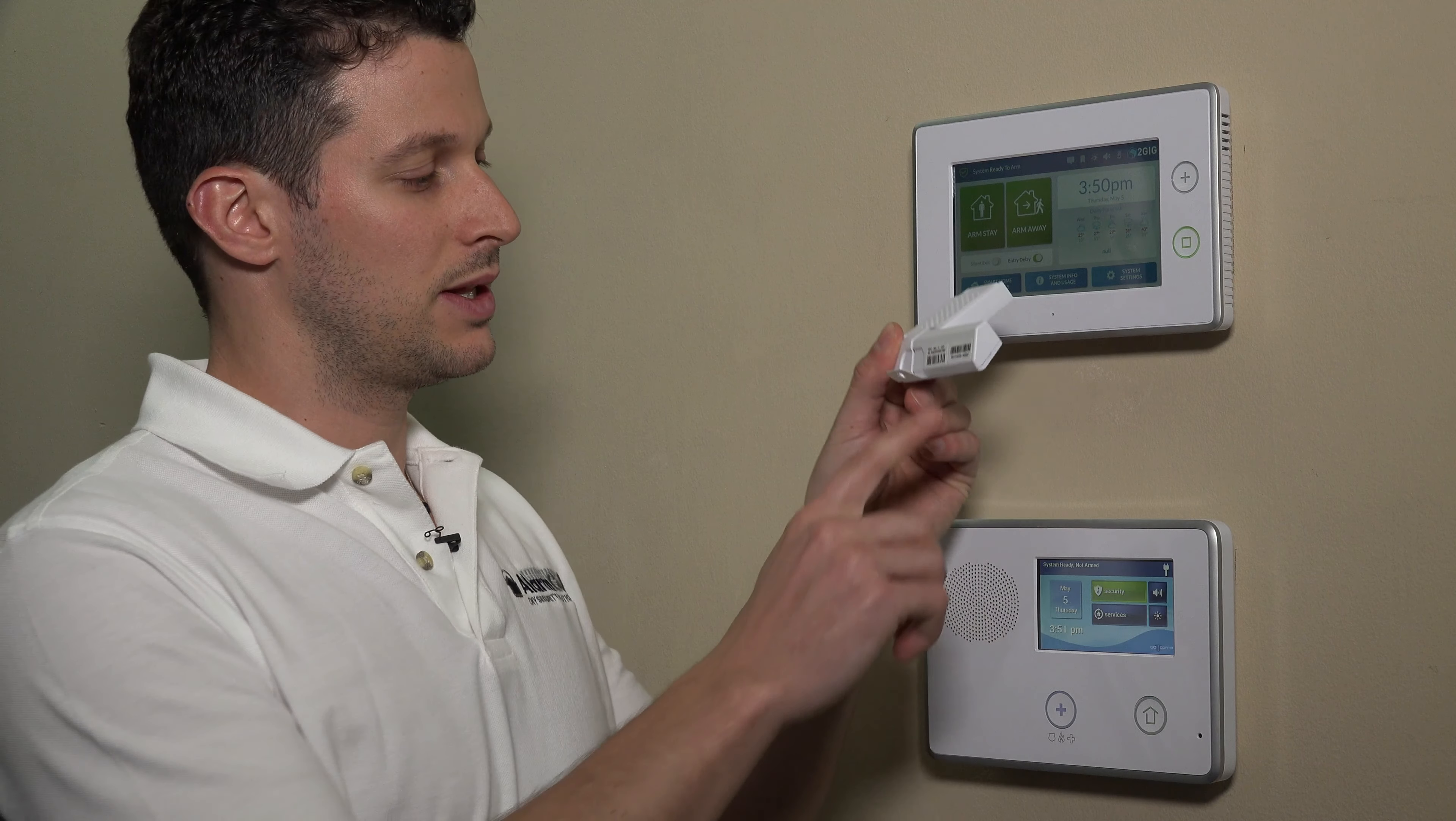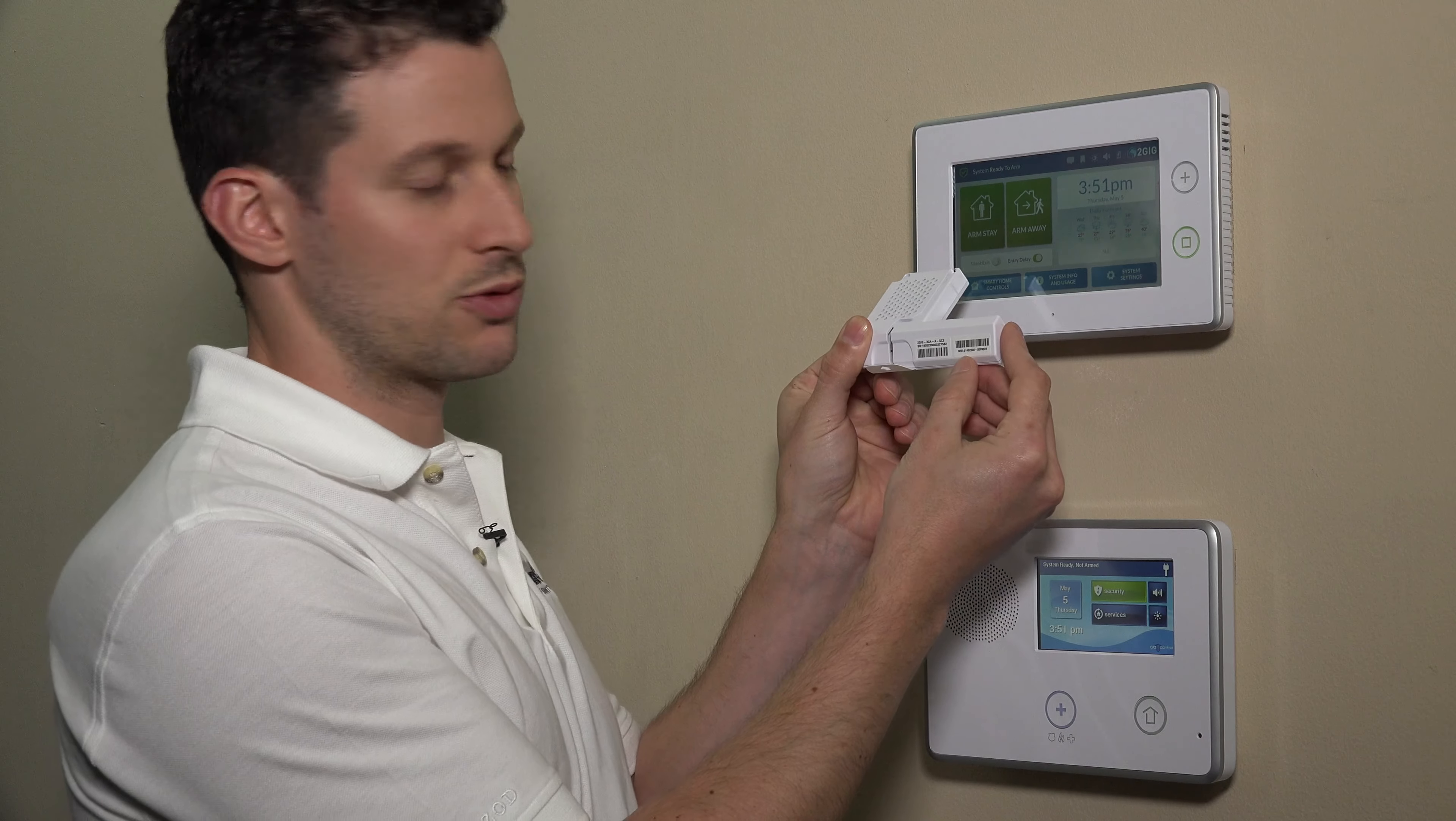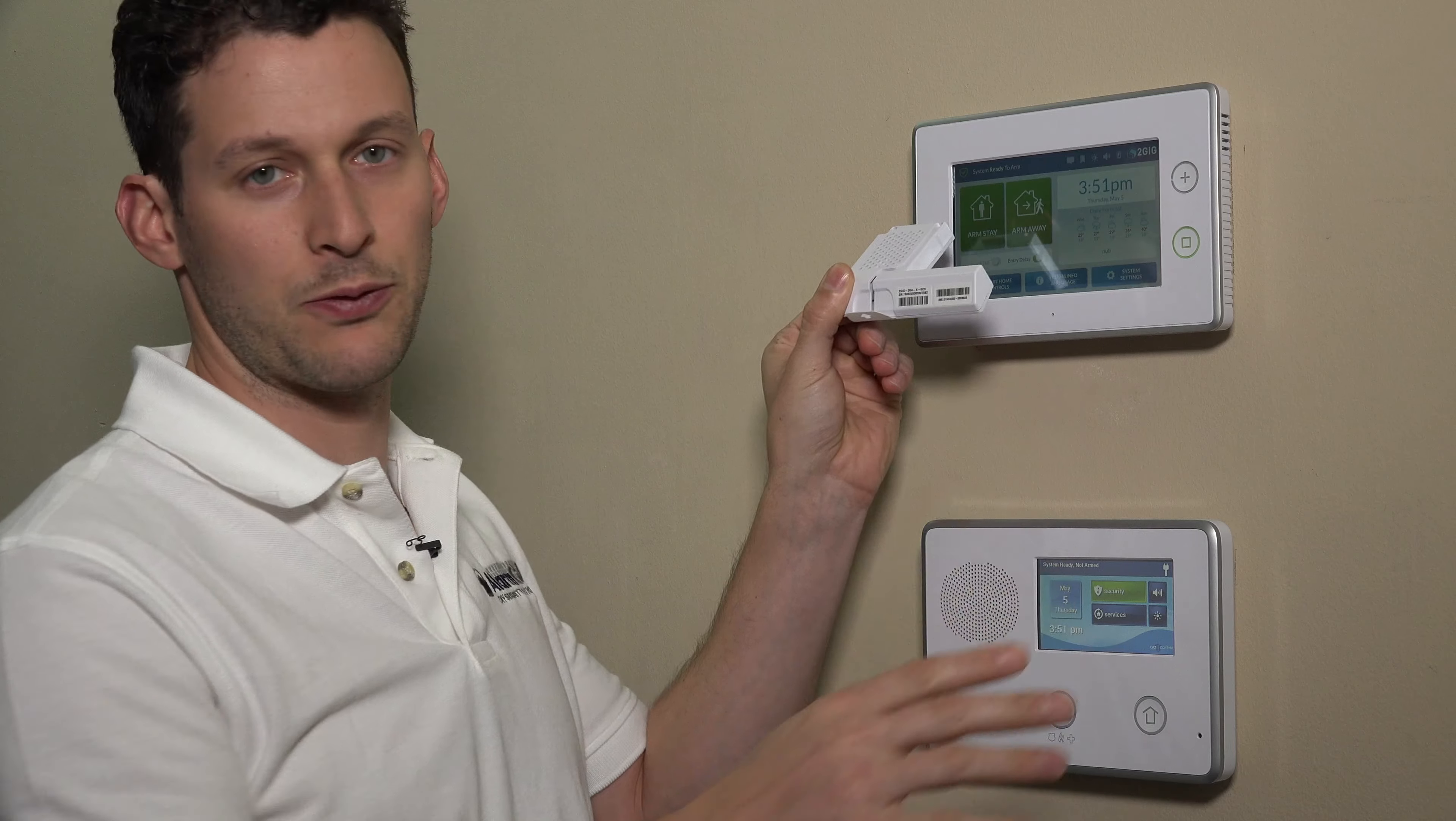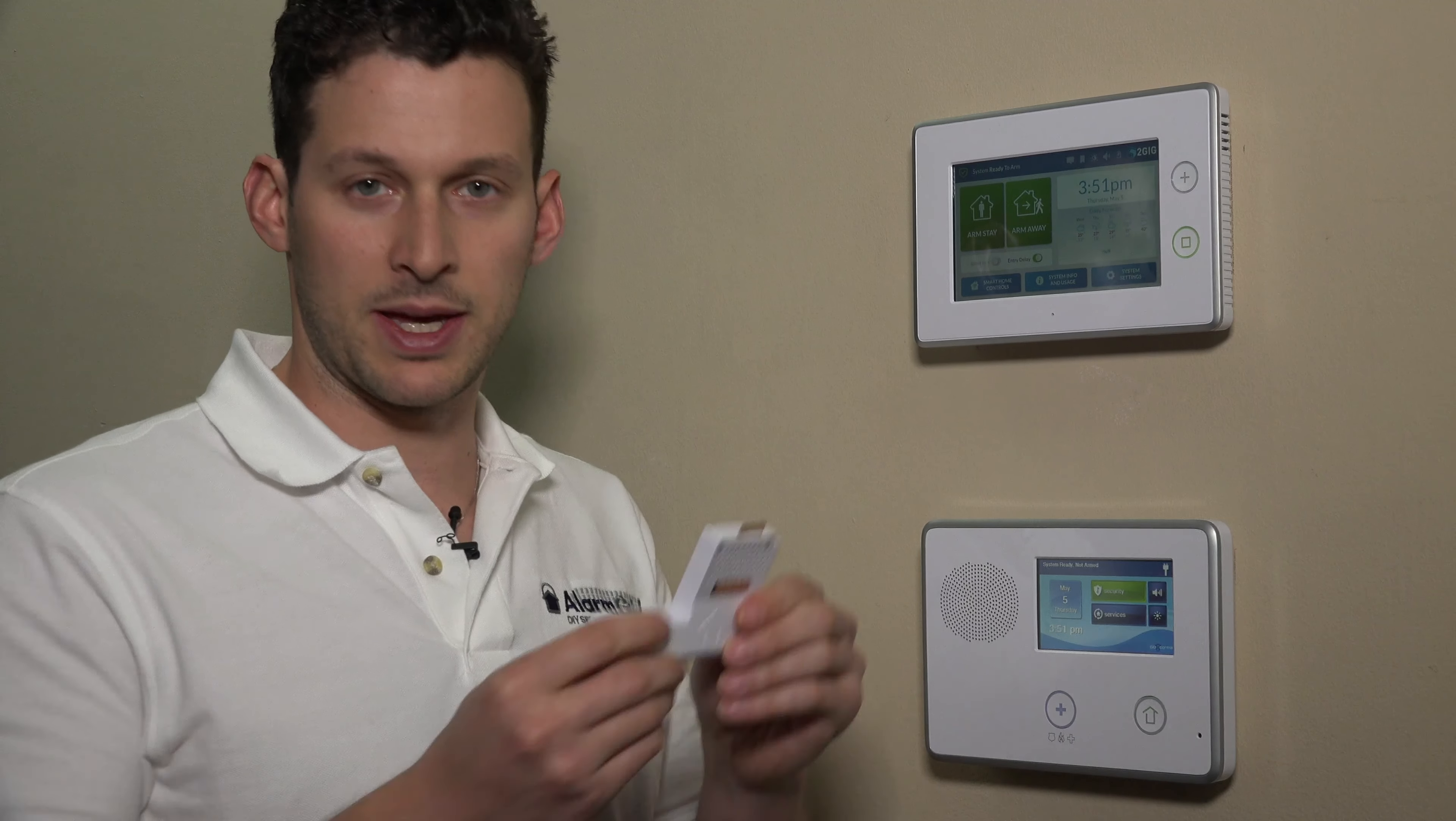And then we'll show you how to send over the IMEI number to your alarm.com dealer. So it's actually listed right here on the unit. So before you install it, the first thing we recommend you do is document that IMEI in full and write it down on a piece of paper, maybe even send yourself an email with it. And then we can install it.